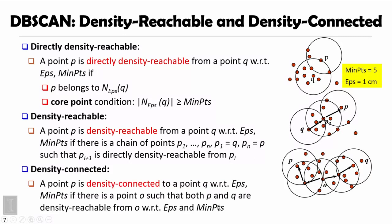We then define density connected: point P is density connected to point Q if there exists a point O that is density reachable to both P and Q. This means P and Q can both be at the border, but as long as there is a point O that is directly density reachable to both, these two points are density connected and belong to the same cluster.